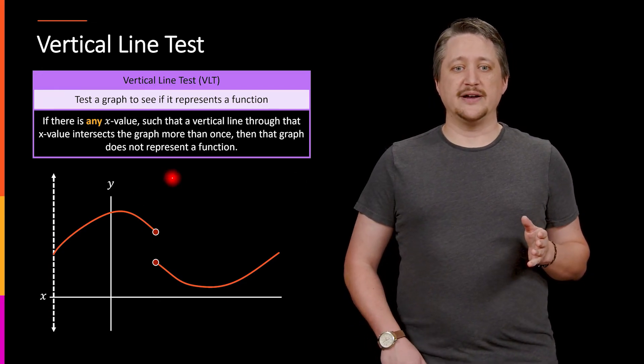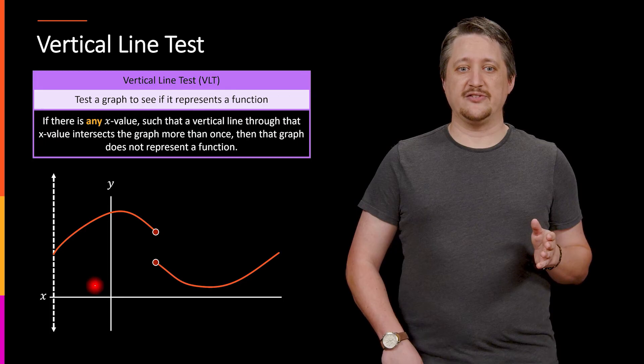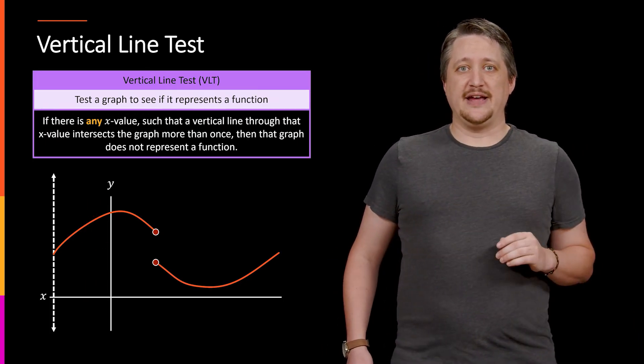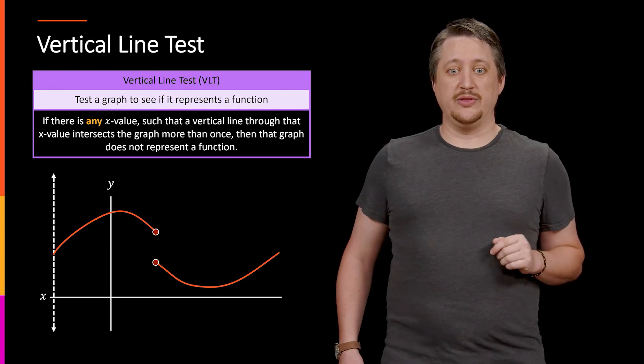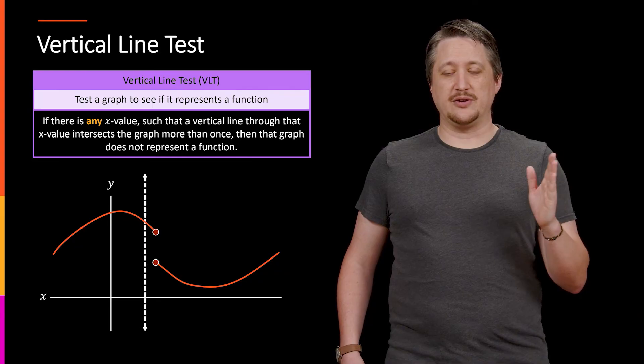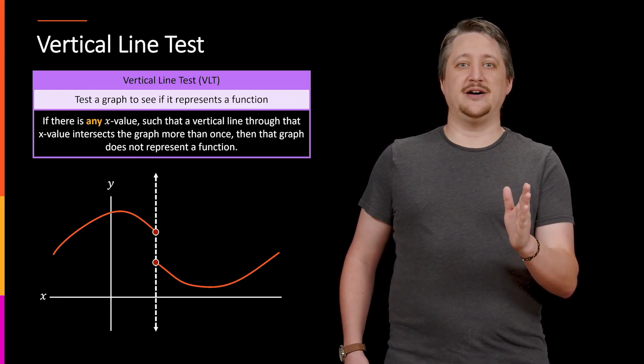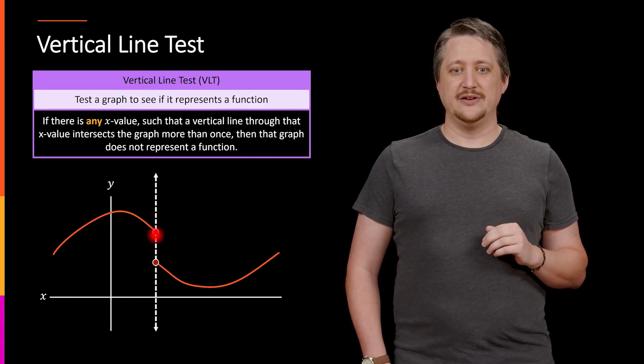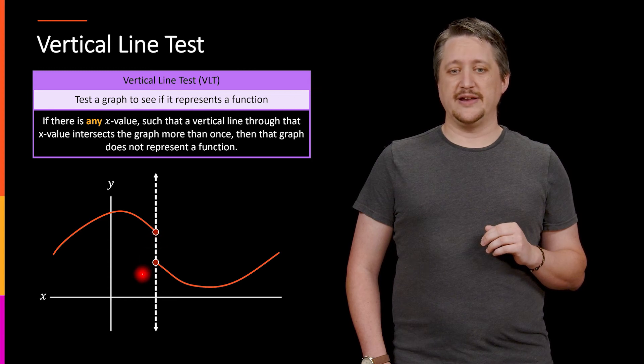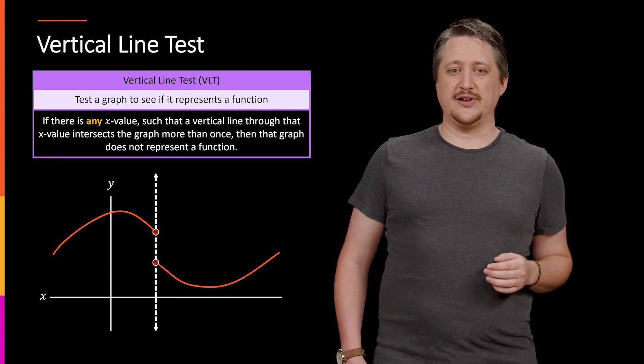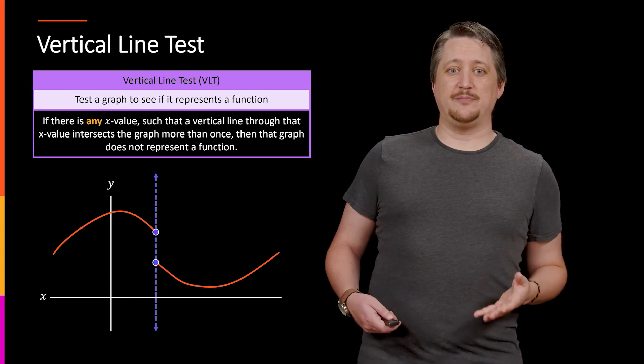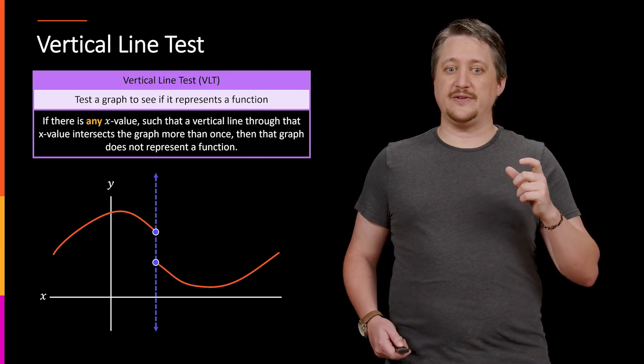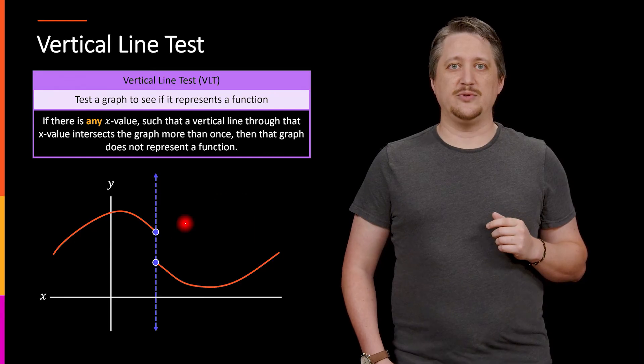I start by drawing my vertical line somewhere on the edge, like in this case on the left, and then I sweep it to the side and look for if it hits somewhere more than once. It starts sweeping across, and then I found a spot where it hits more than one part at one time. In particular, it's hitting this point up here because it's a closed dot, and this point down here because it's also a closed dot. I want to zero in on that spot because I've now hit the curve in more than one spot along that one x value.